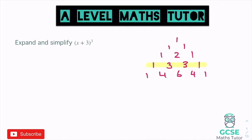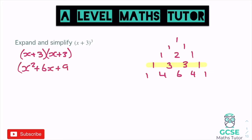It's not as easy to spot the pattern with the cubed bracket, but if we expand it all out, we'd see we get the one lot of x cubed at the start, the one lot of the number at the end which is going to be three cubed, and three of each piece in the middle. At GCSE level, we'd expand two brackets first: (x + 3)(x + 3) gives us x² + 6x + 9, and then we expand that by another (x + 3).